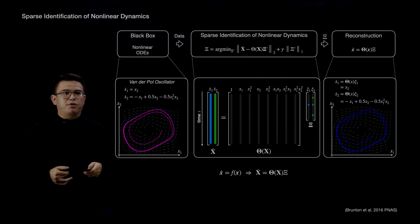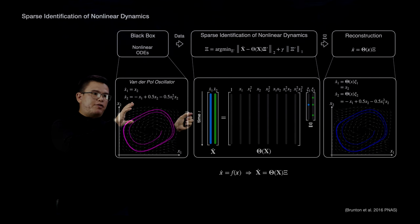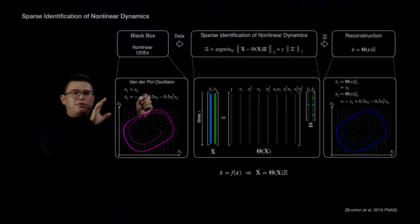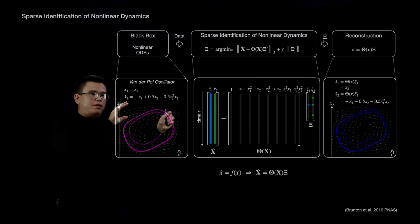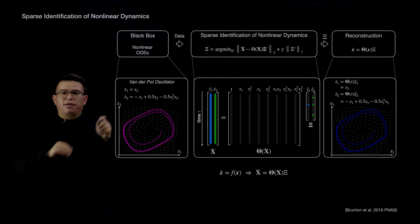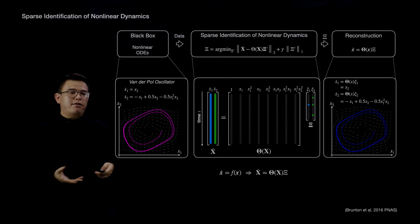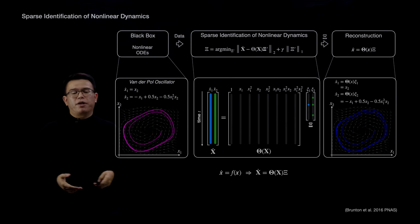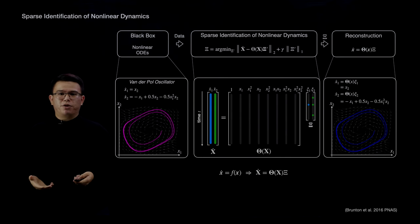For example, after the CINDY regression, the term x2 has been selected from the feature library to represent the state derivative x1-dot. And the features x1, x2, and x1-squared times x2 have been selected from our library to best represent x2-dot. Once we have this sparse vector C, we can do a reconstruction step to determine the symbolic form of the dynamical equations we're looking for.